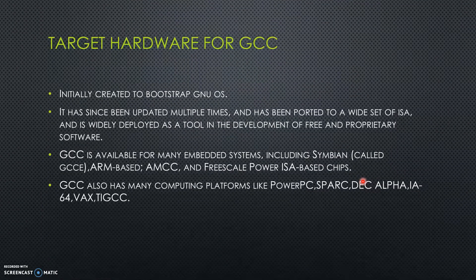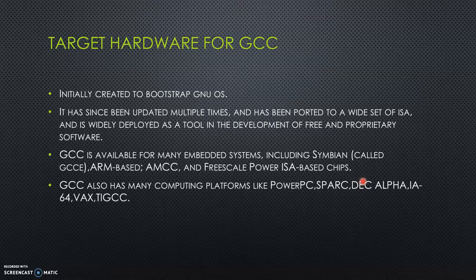The target hardware for GCC was initially created to bootstrap the GNU OS. It has since been updated multiple times and ported to a wide set of instruction set architectures, and is widely deployed as a tool in the development of free and proprietary software. GCC is also available for many embedded systems including Symbian, ARM-based, AMCC, and ISA-based chips. GCC also supports many computing platforms like PowerPC, SPARC, DEC Alpha, and others.